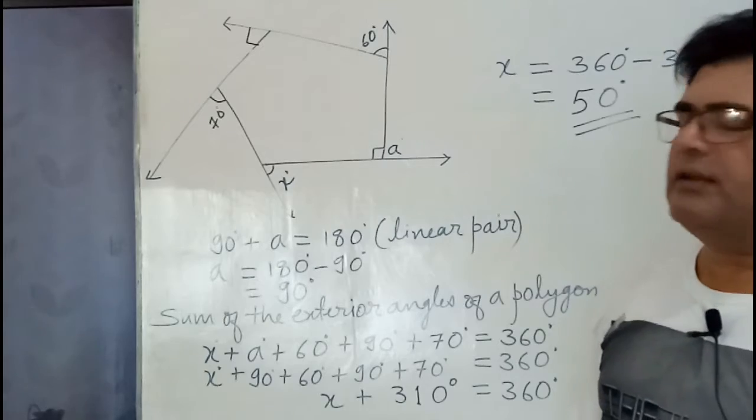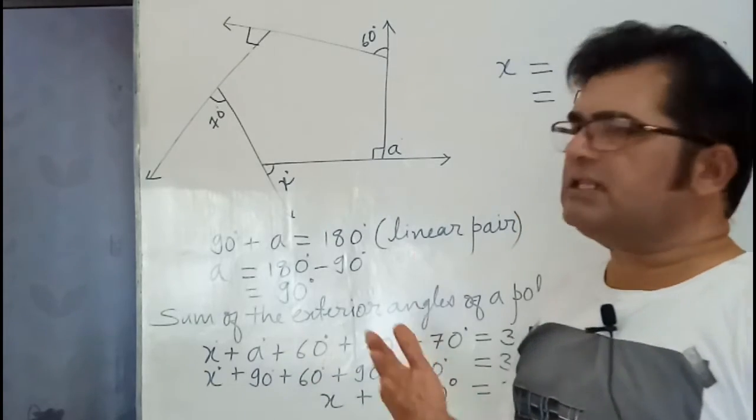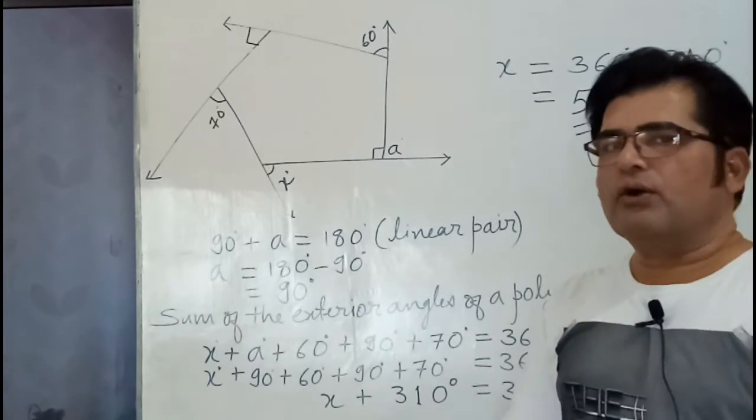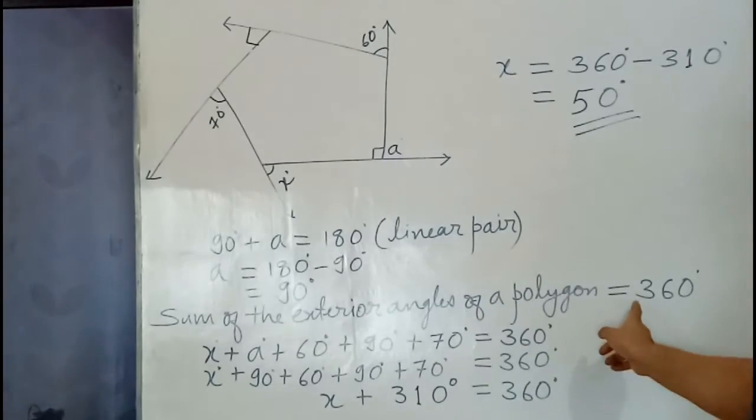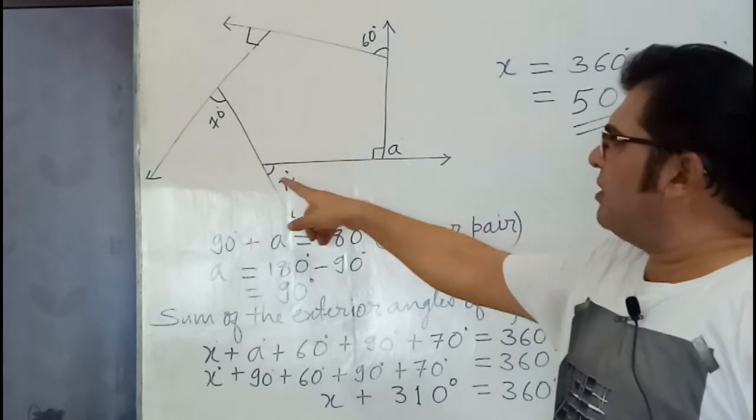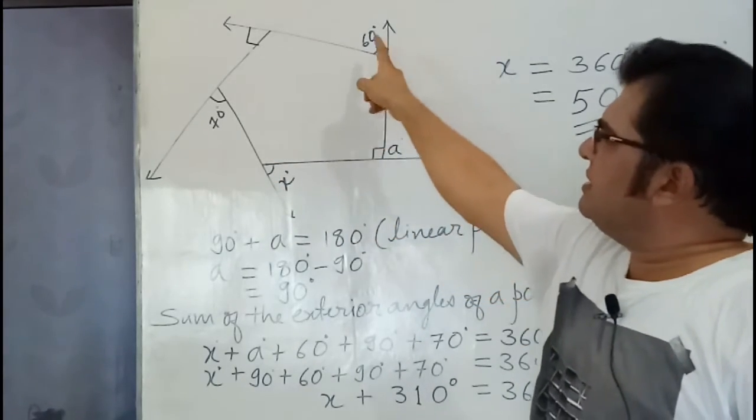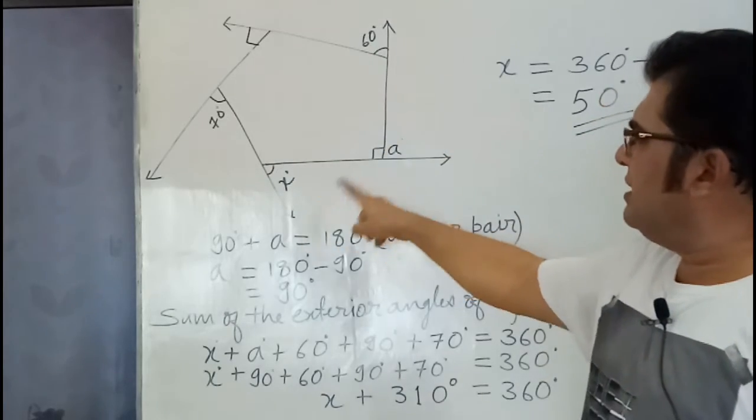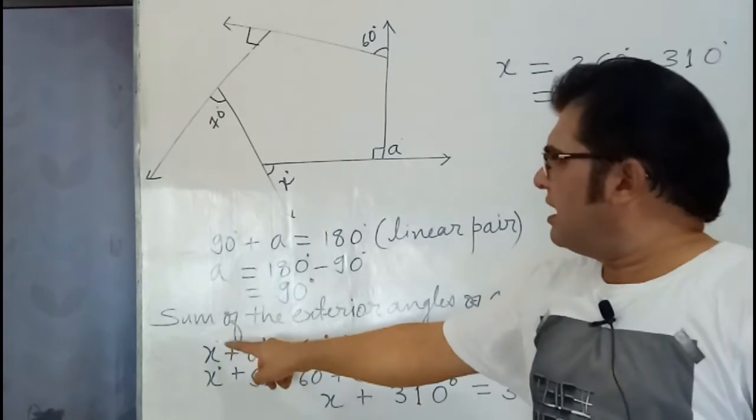Then we know that the sum of the exterior angles of a convex polygon is 360 degrees. So we make the sum of all the angles: 60 degrees, 70 degrees, 90 degrees, X degrees, and A degrees.